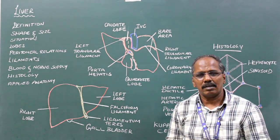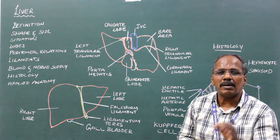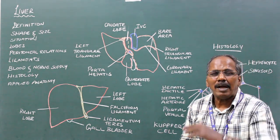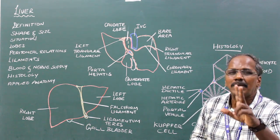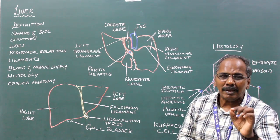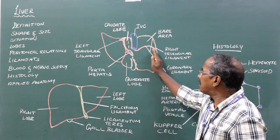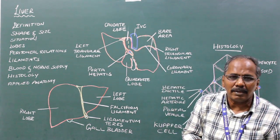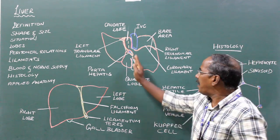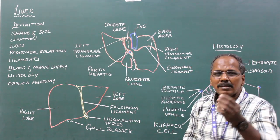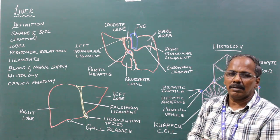The functional lobes are divided based on the intrahepatic distribution of the hepatic duct. There are two hepatic ducts: right hepatic duct and left hepatic duct. The part of the liver drained by the right hepatic duct forms the right functional lobe. The part drained by the left hepatic duct forms the left functional lobe.